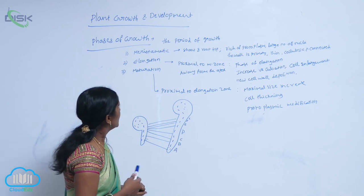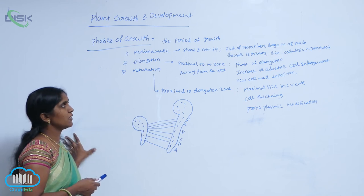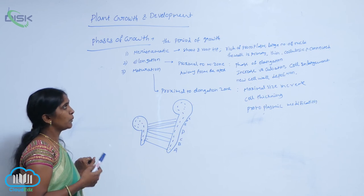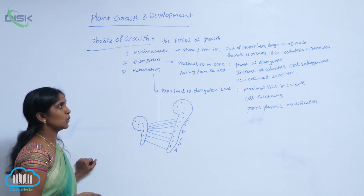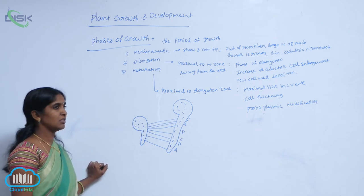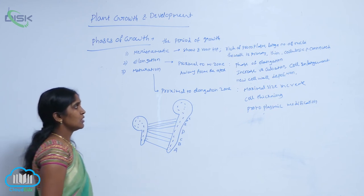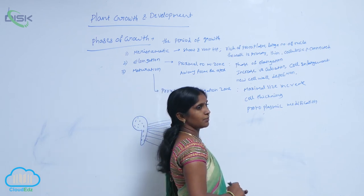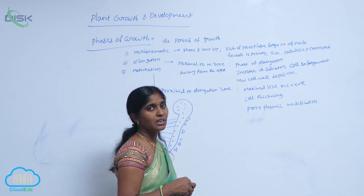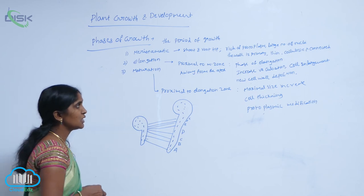The next phase is the elongation phase. The elongation phase is represented by cells proximal to the meristematic zone. This zone is away from the apex, and the cells are involved in growth by increasing the number of vacuoles — meaning increased vacuolation.